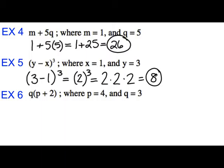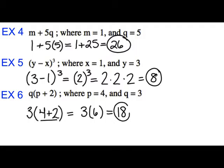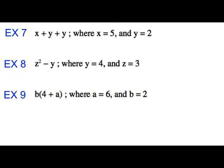Give you a second to try example 6, q times p plus 2. Stop the video and try the problem. Resume the video once you have got the answer. I'm going to let q be 3, p is 4. You could distribute first or order of operations say to do parentheses first. So 3 times 6 which is 18.